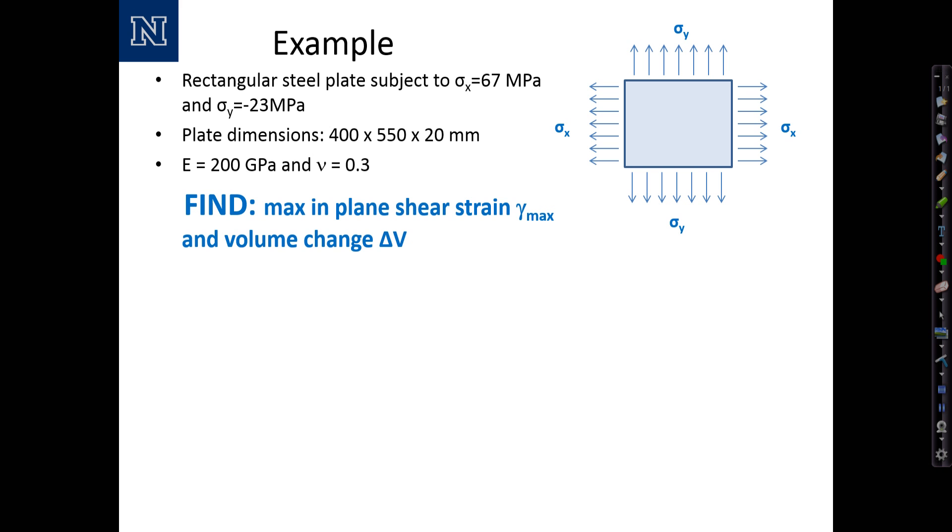We'll concentrate first on the maximum in-plane shear strain and compute it a couple of different ways. Note that we could start by starting with the normal stresses and computing the normal strains in the x and y direction and then transform to the maximum shear strain using Mohr's circle of strain. In this case, the approach is to calculate epsilon x from the equation 1 over e times sigma x minus nu over e times sigma y.